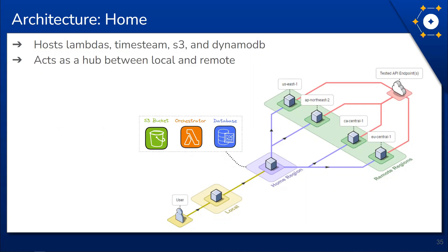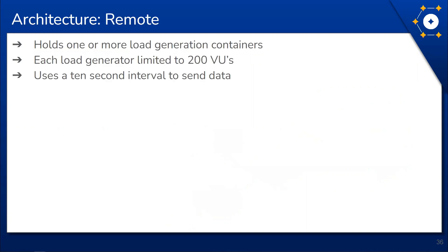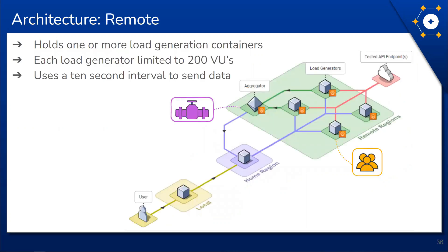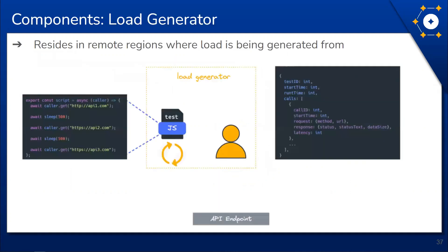Once the initial setup is complete, the focus moves to the remote regions and generating the actual test load. Each remote region hosts some number of load generation containers depending on the desired number of VUs. Each load generator is limited to 200 VUs to provide flexibility for test scripts. The load generators retrieve the test script and configuration from the home region, and fulfill Constellation's need to simulate VUs that repeatedly execute the user-defined script, generating requests and passing the resulting metrics to the data aggregation container.